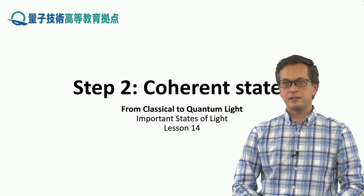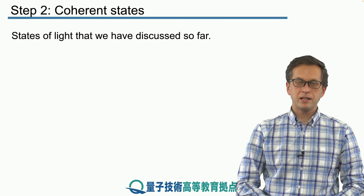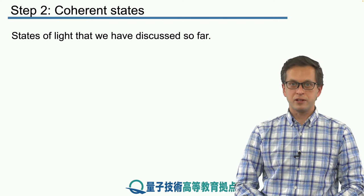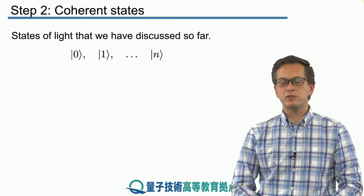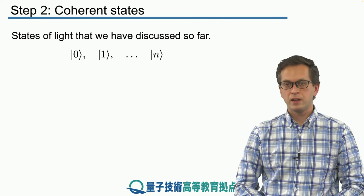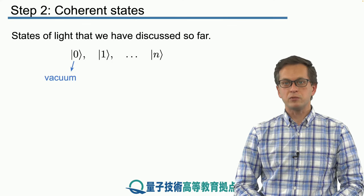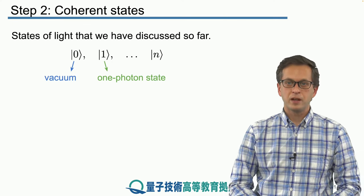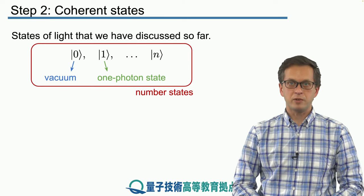Step 2. Coherent states. So the states that we considered up to this point were very simple states. We are writing down ket of 0, ket of 1, or in more general cases ket of n. And we call these states for 0, it was the vacuum; for 1, it was our toy model of a single photon state. And together this class is called as the number states.